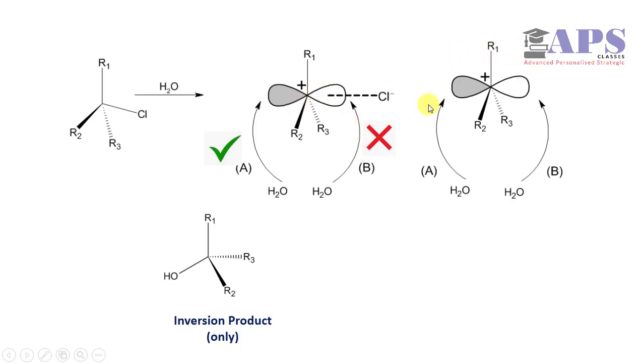With increase in time, we have solvent separated or completely separated carbocation, and in this case water can approach from left side as well as from right side. That's why we have two products: inversion product and retention product, eventually giving a racemic mixture.